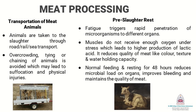Step number one is transportation of animals to the slaughterhouses. The animals are taken to the slaughterhouses through roads, rail, or sea transport. At this step, overcrowding or tying of animals to chains is avoided, which can lead to suffocation and physical injuries.